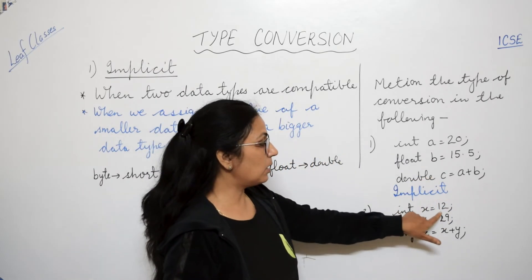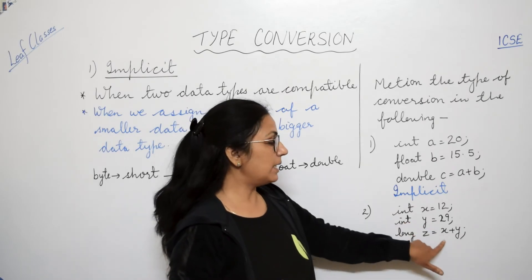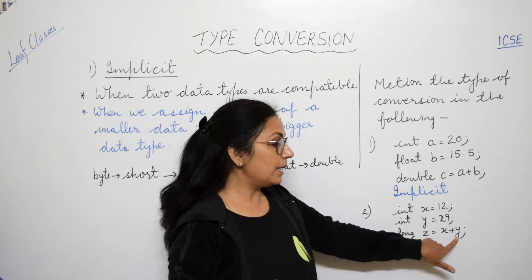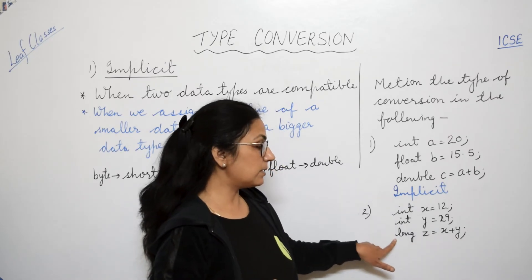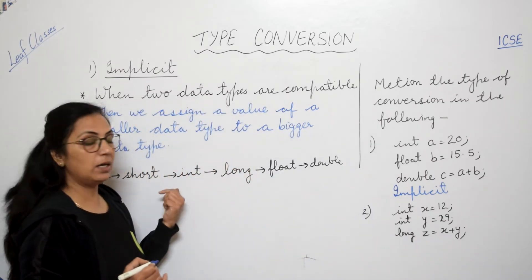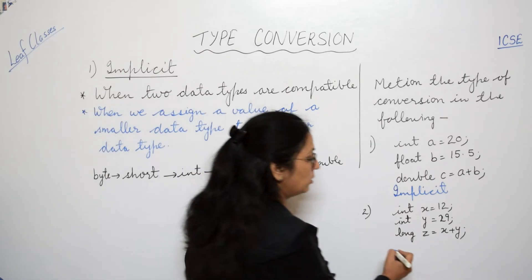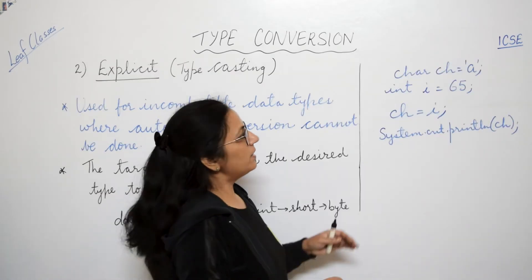Similarly, int x equals to 12, int y equals to 29, long z equals to x plus y. Int and int we are adding together, but we are storing this result in long type. And long has the higher priority over int. So the answer for this will be also implicit.